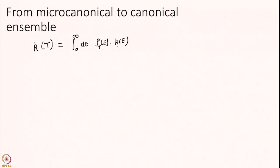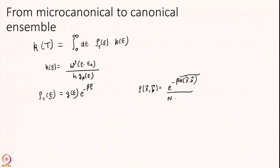K of E we will use the Transition State Expression E minus EA. What is rho? That is the question. We have been writing rho of X comma P as e to the power of minus beta H of X comma P divided by the normalization constant. If I want to write it as a function of one number energy, this H is nothing but energy.